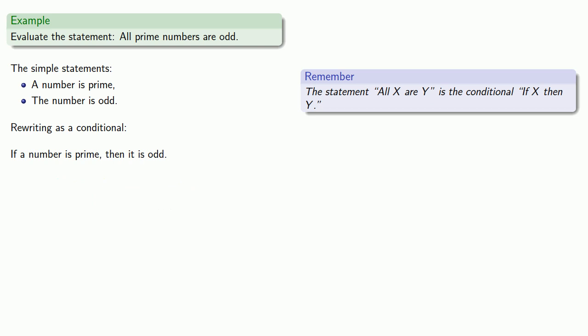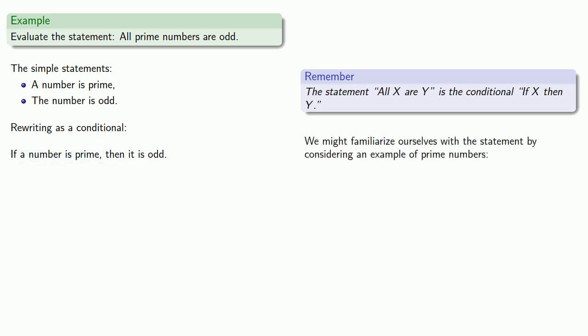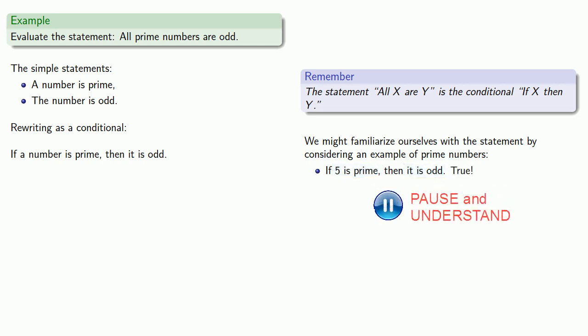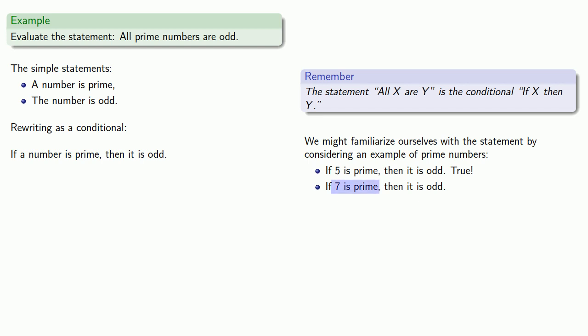Let's evaluate whether this statement is true or false. Remember, it's a conditional, so the only thing that matters is what happens when the antecedent is true. Consider: if 5 is prime, then it is odd. The antecedent is true and the consequent is also true, so this conditional is true. Likewise, if 7 is prime, then it is odd — the antecedent is true, the consequent is true, and so the conditional is true.